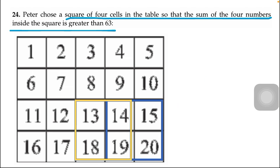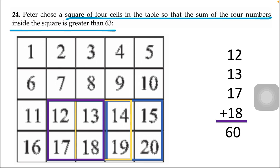Now moving to the left side, the purple box contains 12, 13, 17, 18. The answer is 60. It means this is the wrong box because the sum of the four numbers inside the square must be greater than 63. It is not satisfying our question.